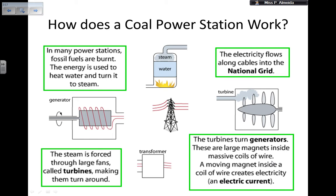Otherwise, let's see how a coal power station works. In a power station, first, fossil fuels are burned. This energy is used to heat the water and turn it into steam. So you have the fossil fuel burned, then you have the water and the steam. This steam is going to be forced through large fans called turbines, and they make the turbines go around. The steam has kinetic energy and makes the turbine start moving.